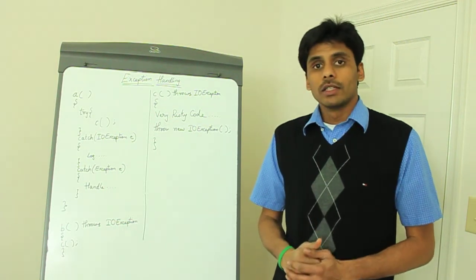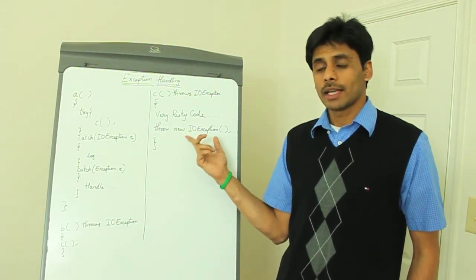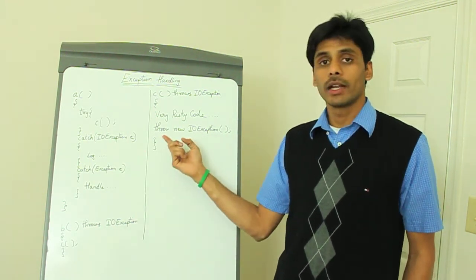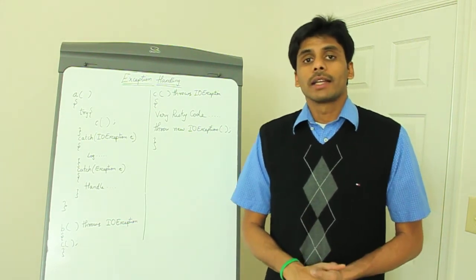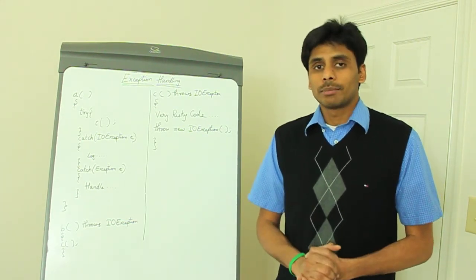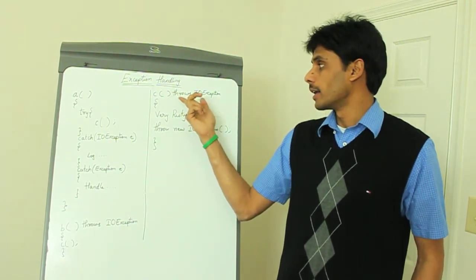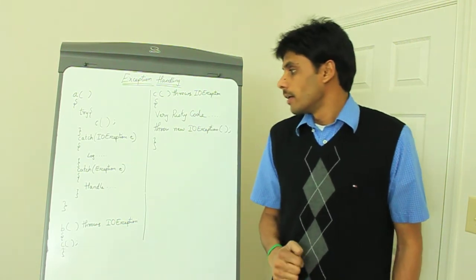To summarize, now you know how to throw an existing exception or your own exception from within your methods using the throw keyword. You also know that you can skip or propagate the checked exceptions without handling them using the throws keyword and it goes at the end of your method declaration or signature.